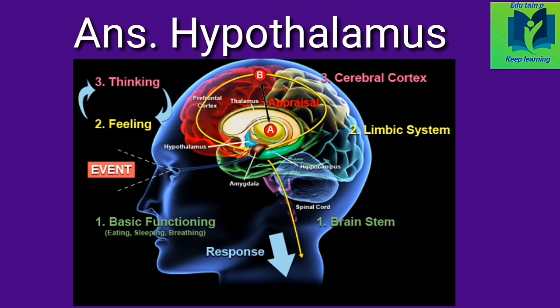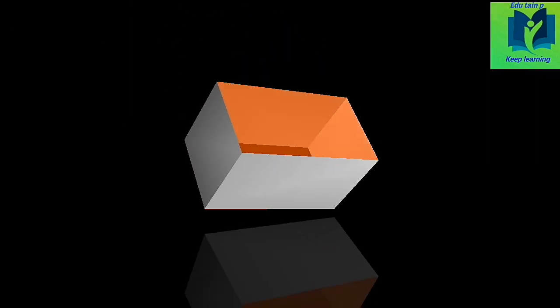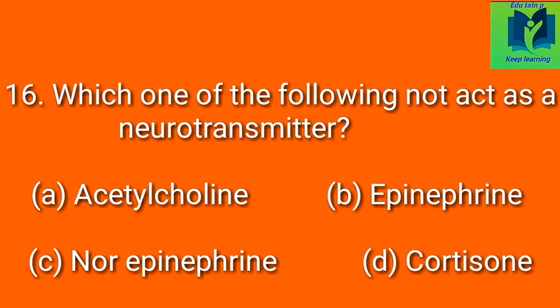Hypothalamus. Which one of the following does not act as a neurotransmitter? Option A: acetylcholine. Option B: epinephrine. Option C: norepinephrine. Option D: cortisone. Answer: cortisone.